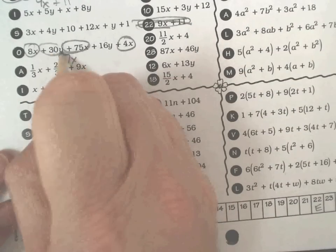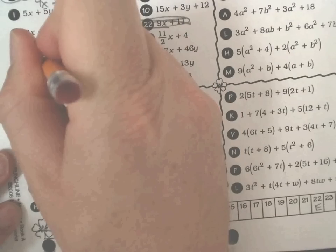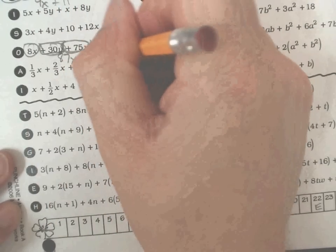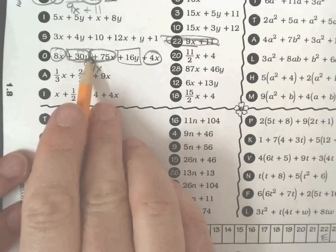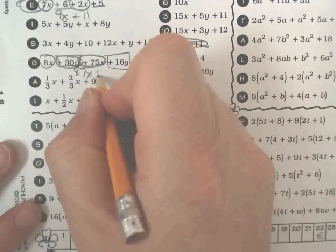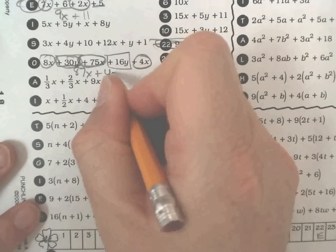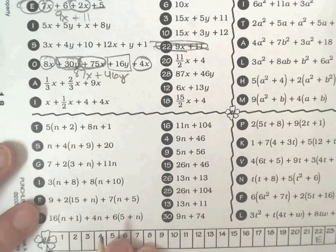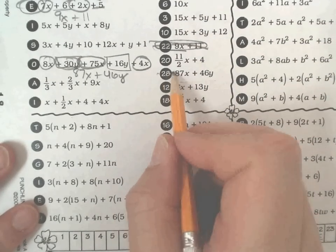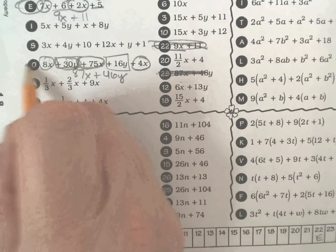Then I can add my other terms together. Whoops, I don't want to, I already used the circle, so I'm not going to use the circle again. So 30y's plus 16y's, that's just 46y's. So here's 87x plus 46y's, so number 28 will be an O.